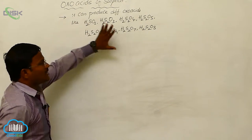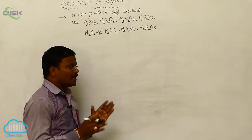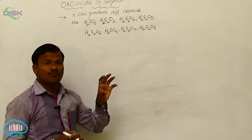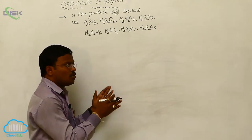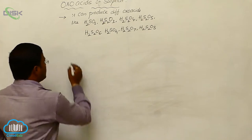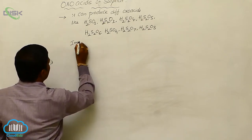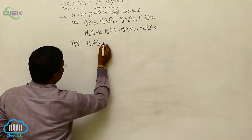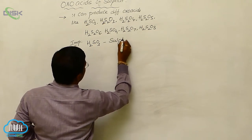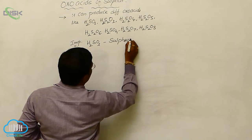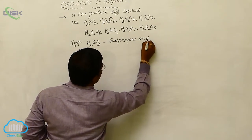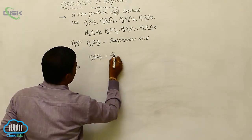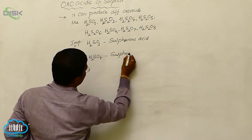All these oxoacids may not be available or stable, and they are non-isolated — they exist only in aqueous form, or some are available in their salt form. Among the above, some important oxoacids are H₂SO₃, sulphurous acid, and the most important sulphur oxoacid, H₂SO₄, sulphuric acid.